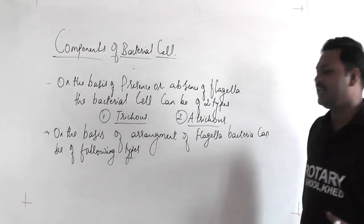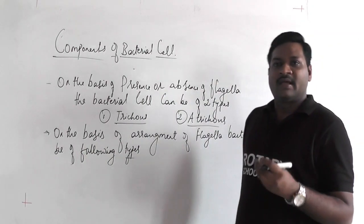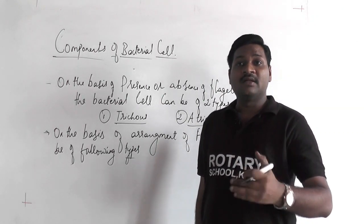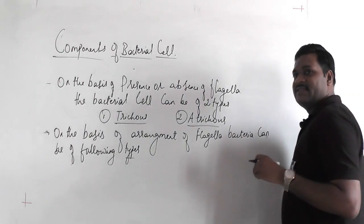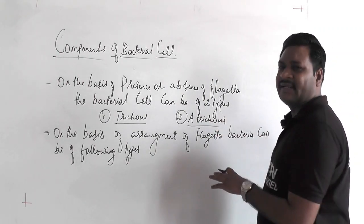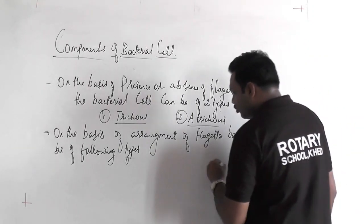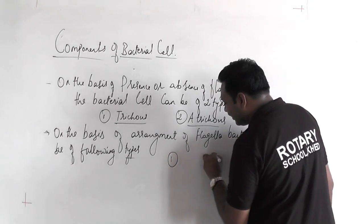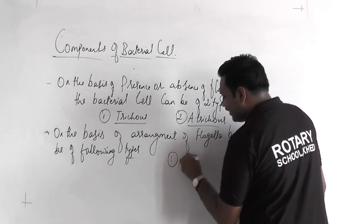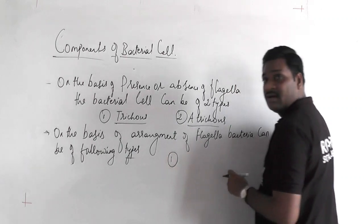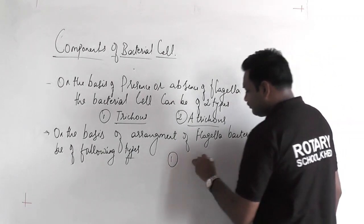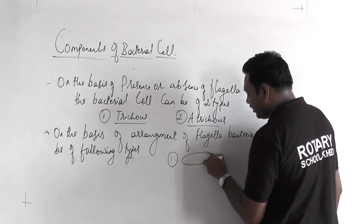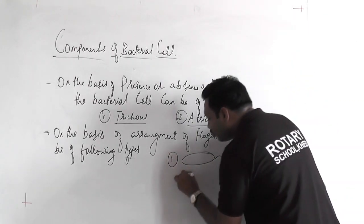A bacterial cell may have a single flagellum or many flagella, and the arrangement also differs. If the bacterial cell has a single flagellum on a single side, then it is called monotrichous. If the bacterial cell has two flagella — one on each side — then it is called amphitrichous.